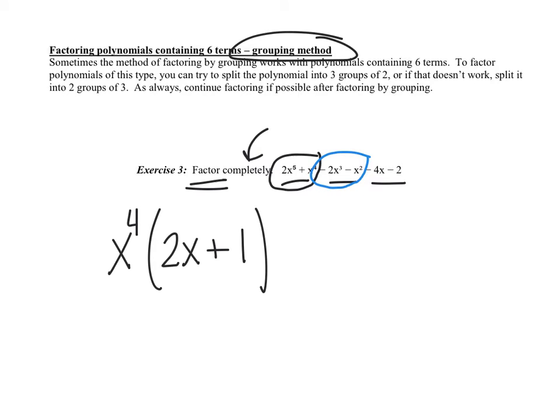Group the next 2 terms. It looks like they have an x squared in common, but I could pull out a positive or a negative. The reason I'm going to pull out a negative x squared is when I divide, in grouping, you want it to be the exact same. If I take a negative 2x cubed and divide a negative x squared, I get a positive 2x. If I take a negative x squared and divide a negative x squared, I get a positive 1. Distribute this back through and check. It checks.